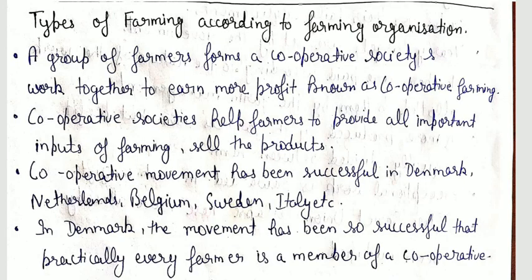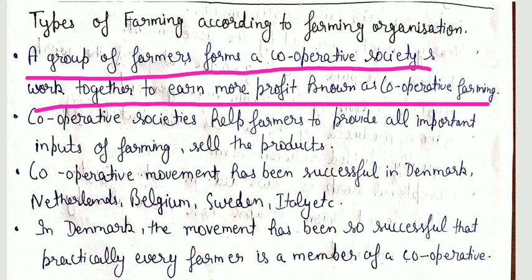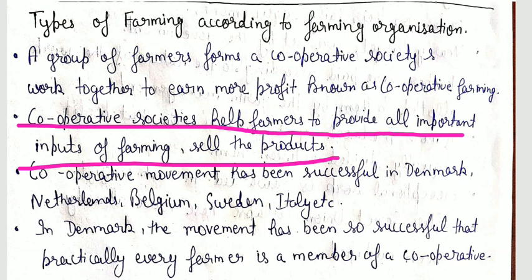According to farming organization, there are two types of farming. First, cooperative farming — where a group of farmers forms a cooperative society. Cooperative societies help farmers to provide all important inputs of farming and to sell their products.